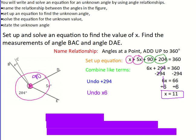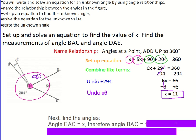But this problem tells us to go a step further. They want you to find the measurements of angle BAC and DAE. Well, angle BAC is just the x. So angle BAC is just 11 degrees.